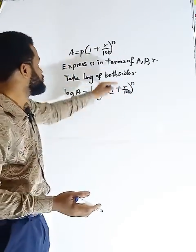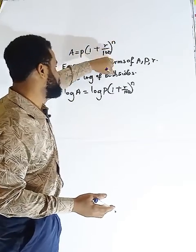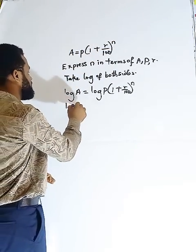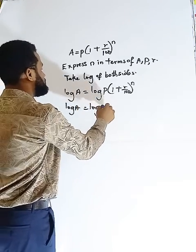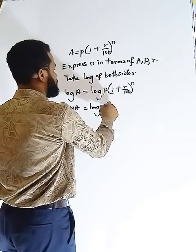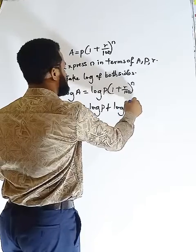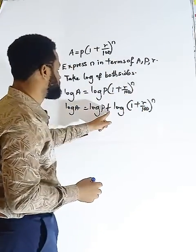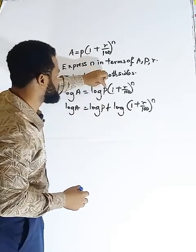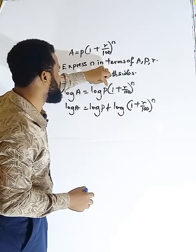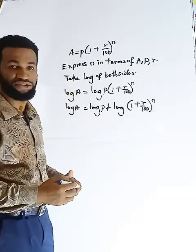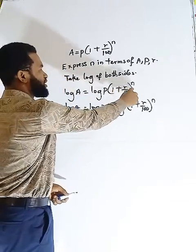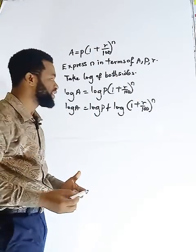So why am I using log? To carry this that was on top, to bring it down. That is the essence of log. So I have log A is equal to log P plus log 1 plus R over 100, all raised by N. Why the plus? The law says when you are multiplying, P is multiplying the whole bracket. So when you are multiplying, it changes to addition. So log P plus the log of everything in this bracket with that power.